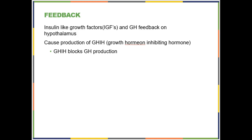Direct and indirect effects are not part of the essay question, but you do want to be able to answer true-false and multiple choice questions about them. Insulin-like growth factors and growth hormone feed back on the hypothalamus and cause the production of growth hormone-inhibiting hormone. As a study tip: human beings are highly visual, and our visual cortex is the biggest part of our sensory cortex. As much as you can take advantage of diagrams, do so — even if you're answering questions using sentences, diagrams help you remember the information.